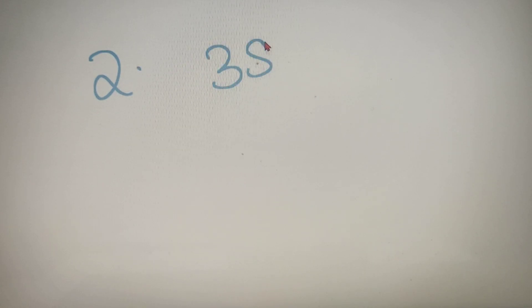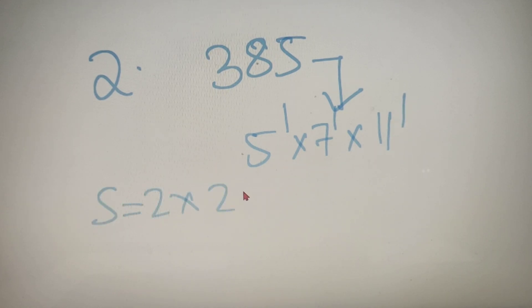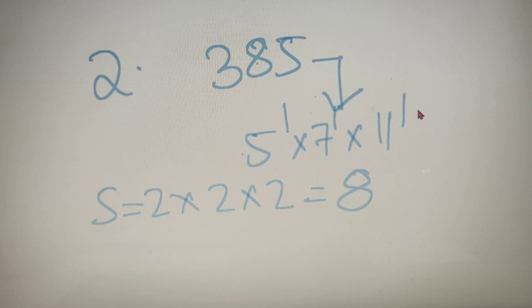For our second example, we have to calculate the number of factors of 385. On prime factorization, the result comes out as 5 to the power 1 into 7 to the power 1 into 11 to the power 1. So the number of factors is equal to 2 into 2 into 2, which is 2 to the power 3, which equals 8. This is because all the powers are 1, so 1 plus 1 equals 2, and it appears 3 times. So the number of factors of 385 is equal to 8.